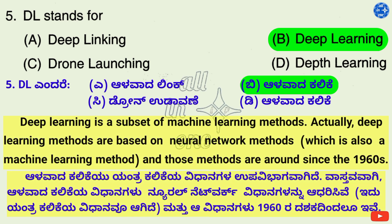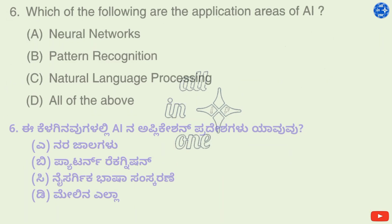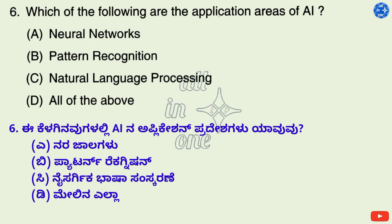Deep learning is a subset of machine learning methods. Deep learning methods are based on neural network methods, which is also a machine learning method and those methods are around since the 1960s. Question 6.